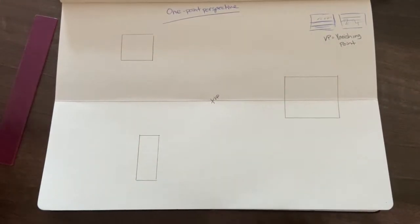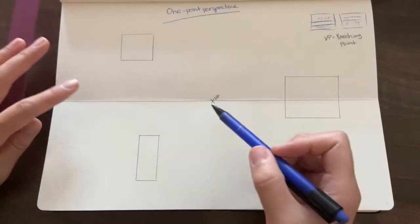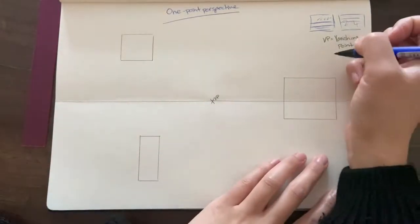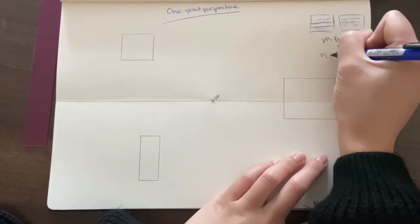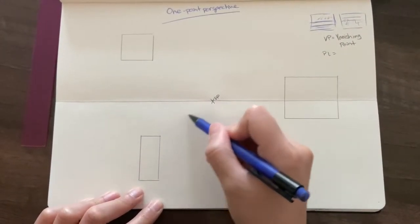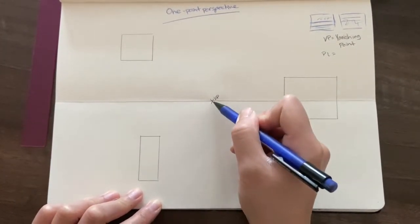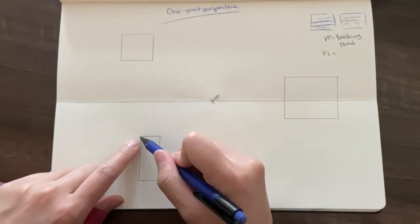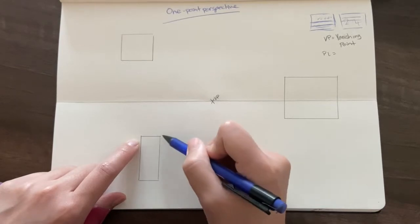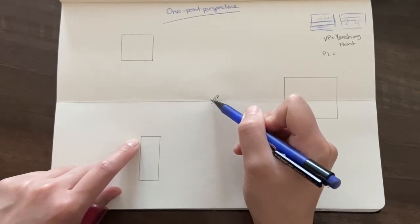The next thing you need to do is add the projection lines. So projection lines means lines that would always meet a vanishing point. So you always use corner points in this instance to join up to the vanishing point.